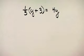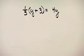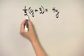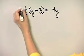Let's solve this equation for Y. Remember your steps for solving. Since this has a fraction in it, let's go ahead and multiply both sides of this equation by the LCD. The least common denominator is 3.